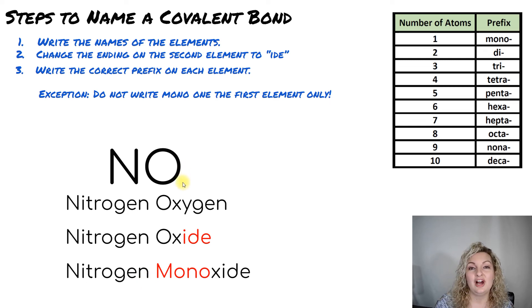And then we have one for oxygen as well. So it is going to be mono. And because it's a second element, we are going to write the mono on that one. So it ends up being monoxide. Notice we didn't write the double O. We just left one O there. So it's just nitrogen monoxide.